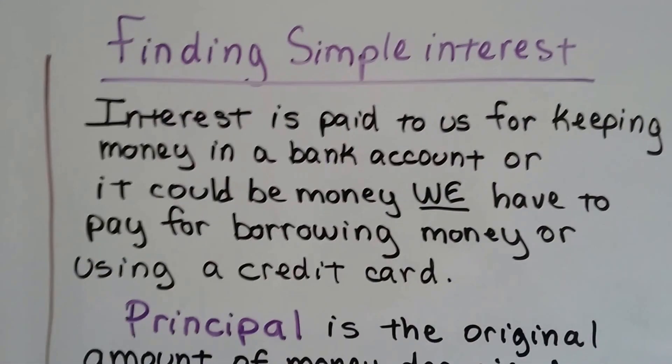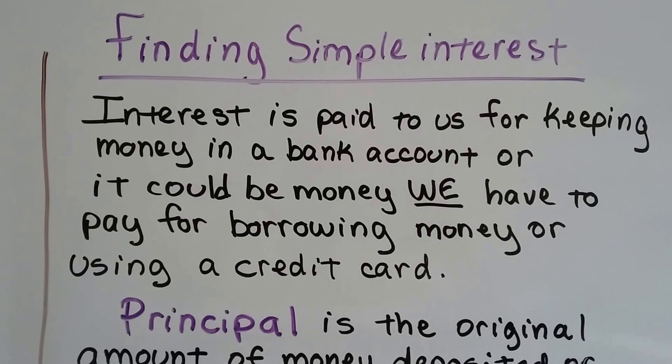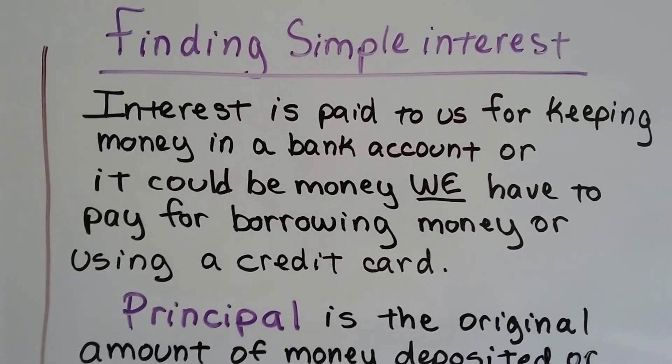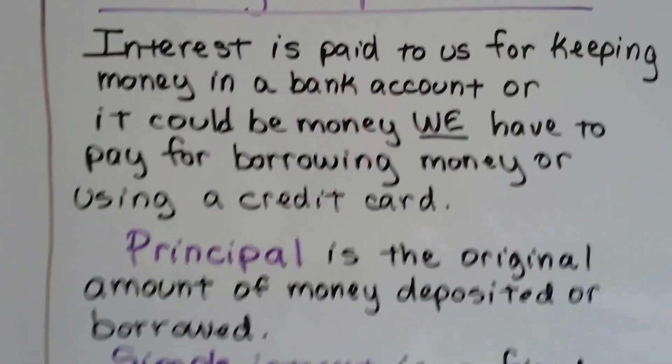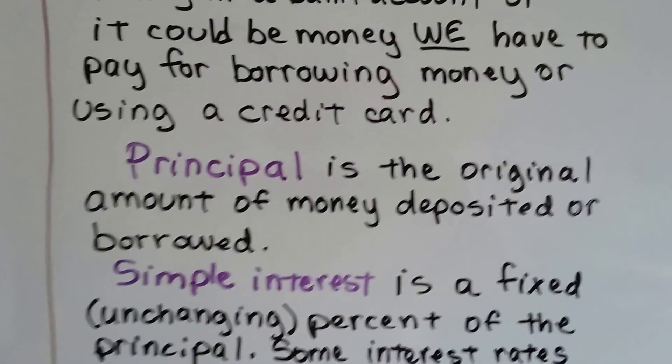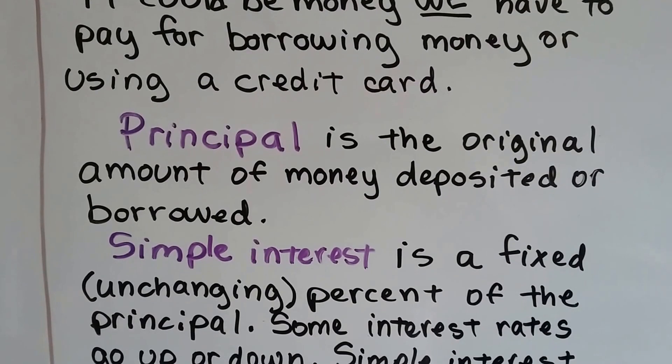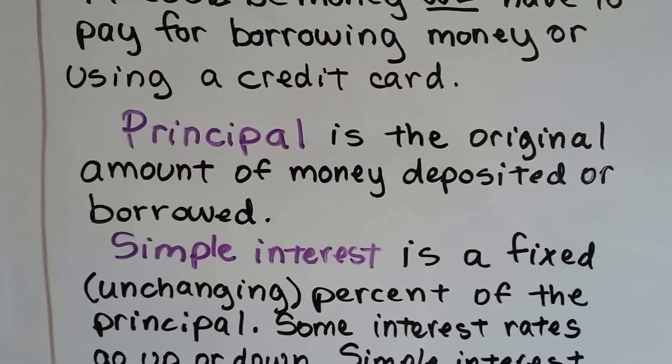Finding simple interest. Interest is paid to us for keeping money in a bank account, or it could be money we have to pay for borrowing money or using a credit card. Principle is the amount of money deposited or borrowed. That's the big chunk of money. And then the interest is based off of the principle.